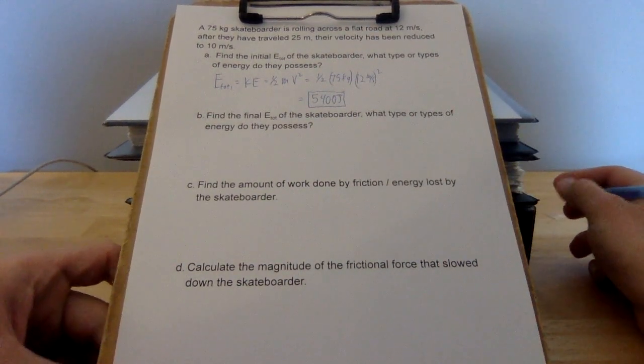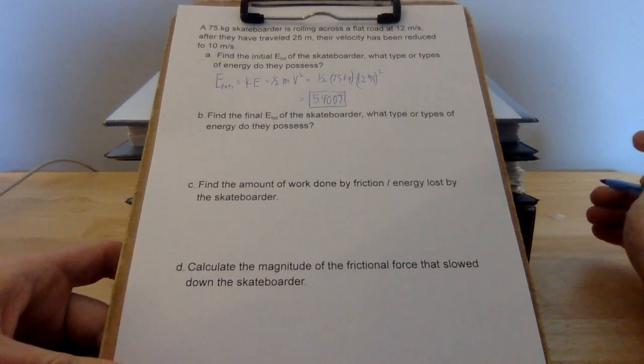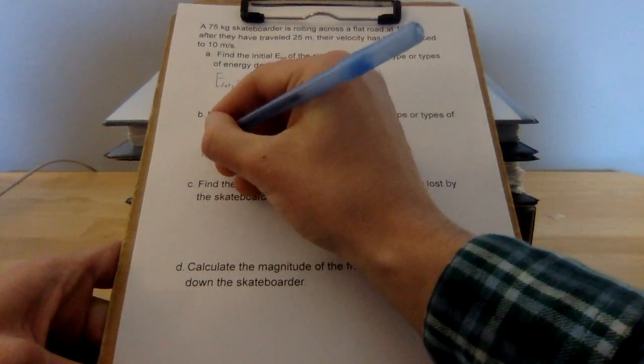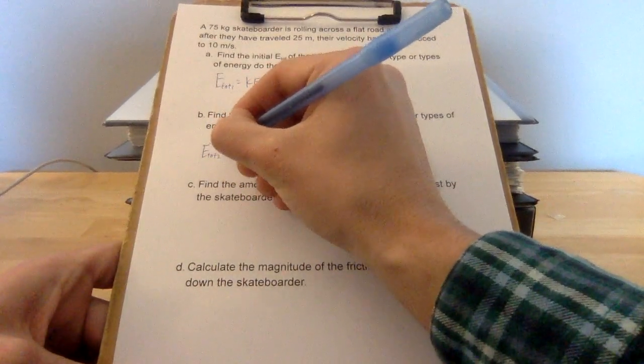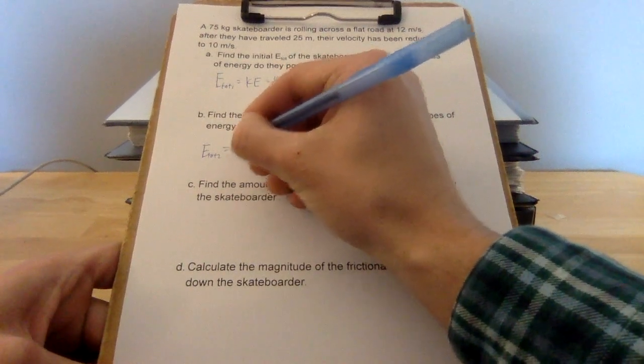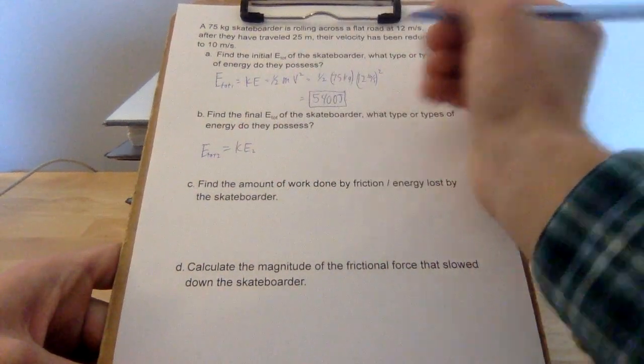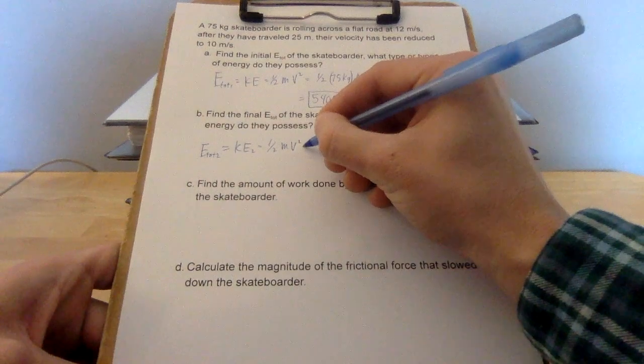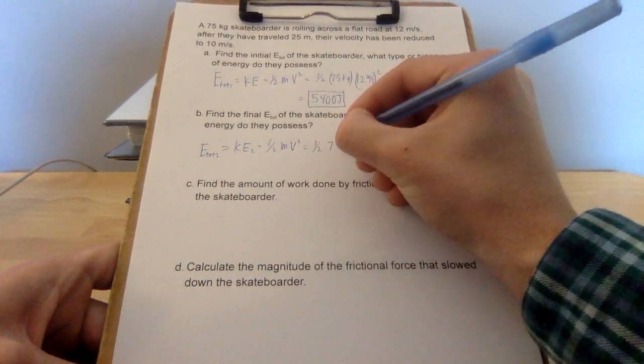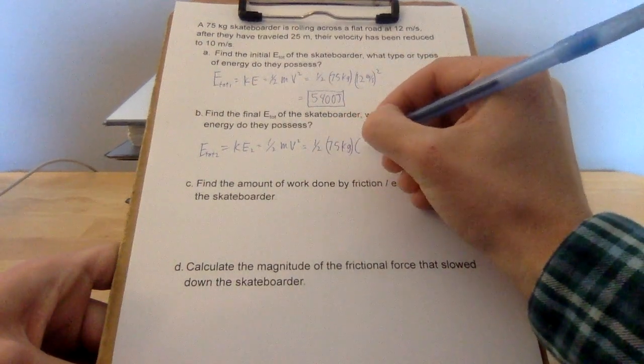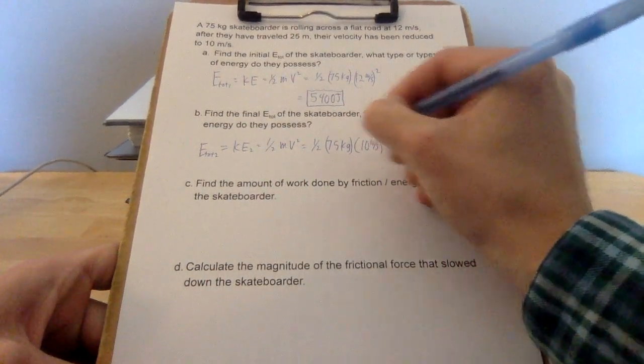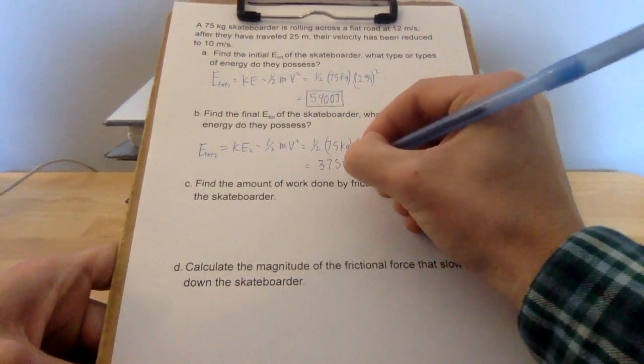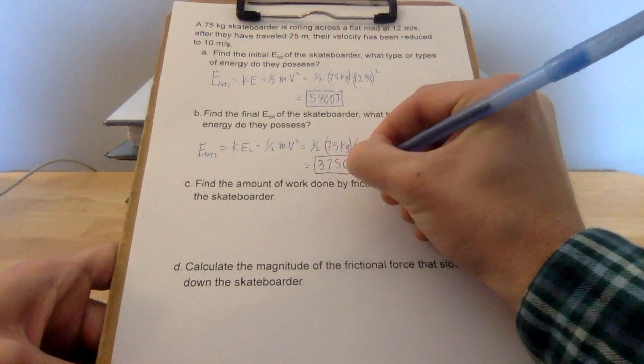And now we will find the total energy later. So in this scenario, the skateboarder's velocity has been reduced. I'm still only working in the realm of kinetic. So their final total energy is only in the form of kinetic. So once again, we do a 1 half mv squared calculation, and we will get 3,750 joules of energy.